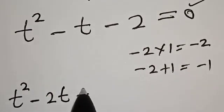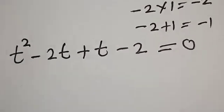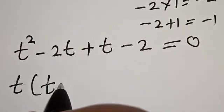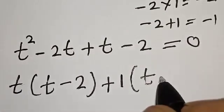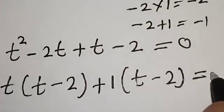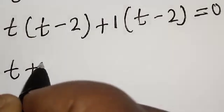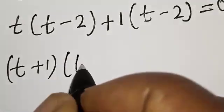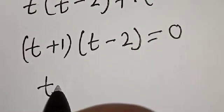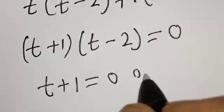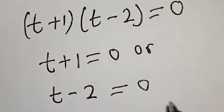Then we have t squared minus 2t plus t minus 2 is equal to 0. Now we have t into t minus 2 plus 1 into t minus 2 is equal to 0. Then we have t plus 1 into t minus 2 is equal to 0.